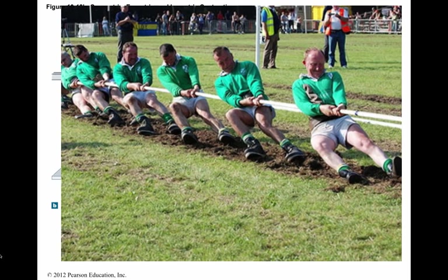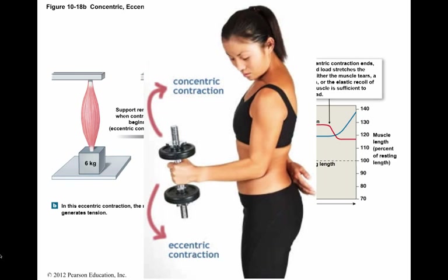Think of a tug-of-war team trying to stop a moving car. Although everyone pulls as hard as they can, the rope slips through their fingers. During physical training, people commonly perform cycles of concentric and eccentric contractions, as when you do bicep curls by holding a weight in your hand and slowly flex and extend your elbow. During flexion, your biceps involve concentric contractions. During extension, your biceps are still actively contracting but now involve eccentric contraction.